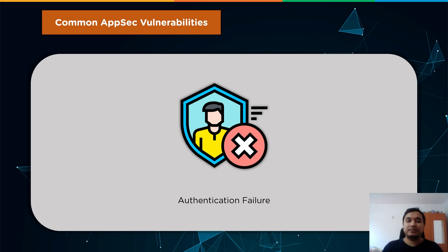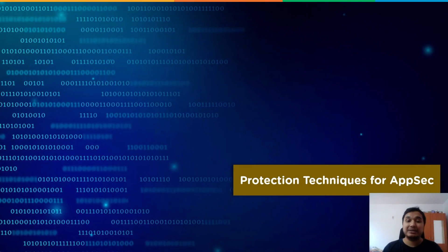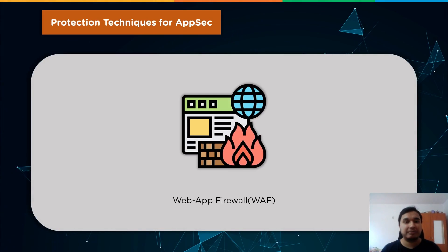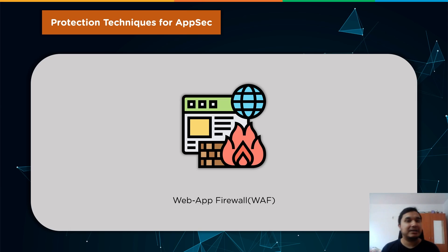Let us now cover some of the protection mechanisms employed by cybersecurity firms and third-party automated software to prevent the application layer from being bombarded with SQL injections and other attacks. The first is a web application firewall, or WAF. A web application firewall monitors and filters HTTP traffic between a web application and the worldwide web.